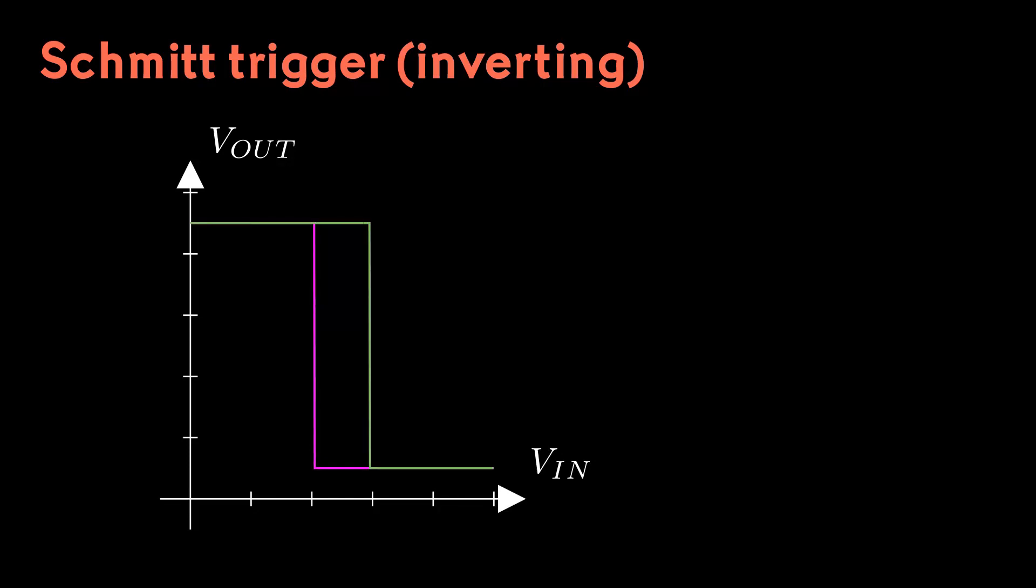When the input voltage stays between the two thresholds, the output voltage does not change. If it started out logic high, it stays logic high. If it started out logic low, it stays logic low.